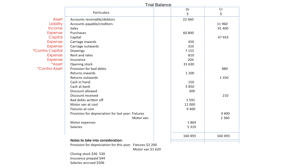Returns inwards — expense. Returns outwards — income. Cash in hand — asset. Cash at bank — asset.